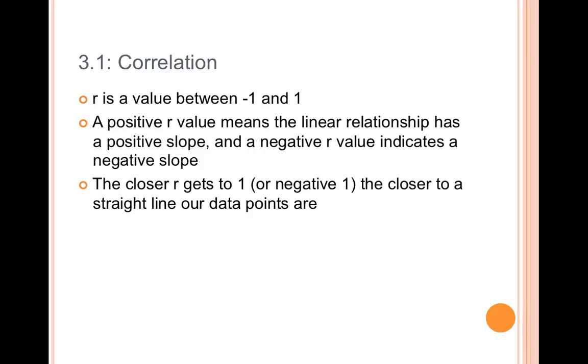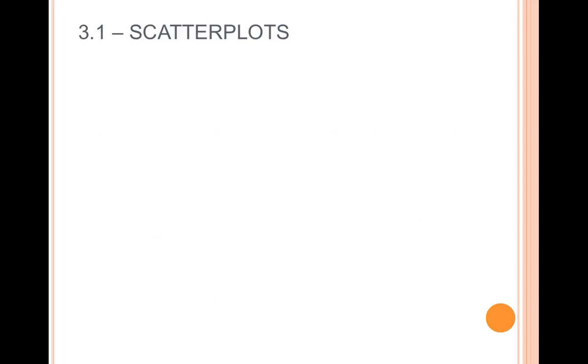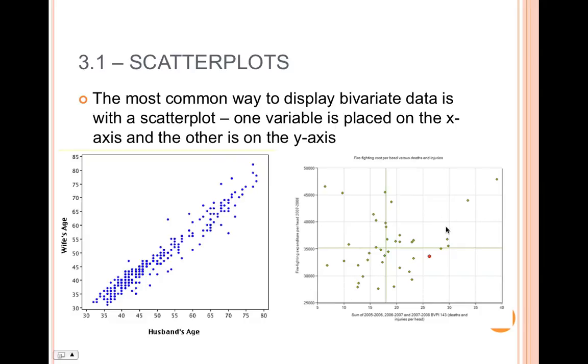I want you to think about what a correlation of 0 would look like. A correlation of 0 does not mean a slope of 0. That's actually a completely different case. A correlation of 0 is going to look like just random scatter. It's going to look like you sneezed on your paper. You've got just kind of a random scattering of points. So a sneeze on a page is a correlation of 0. No real relationship. So that second scatter plot that I showed you before, the firefighting one, I would say has a correlation pretty close to 0.